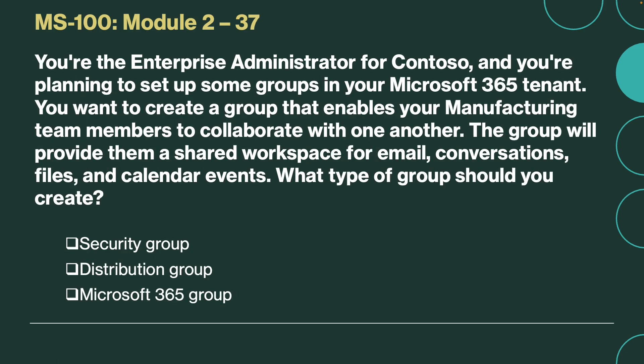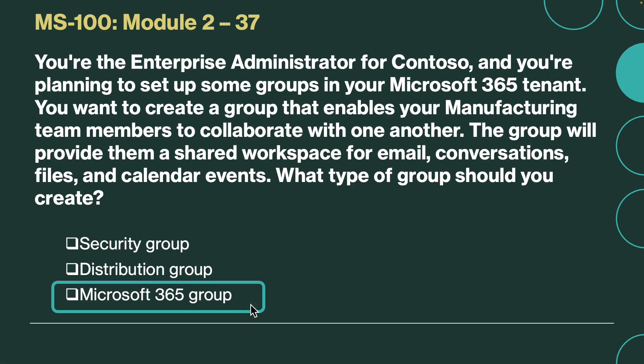Next question. You are the enterprise administrator for Contoso. You are planning to set up some groups in your Microsoft 365 tenant. You want to create a group that enables your manufacturing team members to collaborate with one another. The group will provide them a shared workspace for email, conversations, files, and calendar events. What type of group should you create? The correct answer is Microsoft 365 group. A Microsoft 365 group is similar to a distribution group in that it has its own mailbox and its members receive email messages sent to the group. However, it differs from distribution groups in that it allows teams to collaborate by providing them a shared workspace for email, conversations, files, and calendar events.